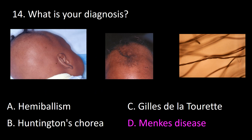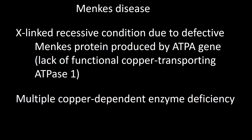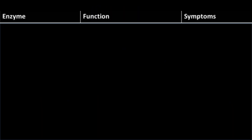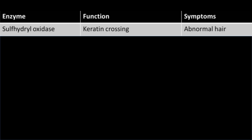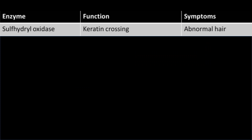Menkes disease is an X-linked recessive condition due to a functionally defective copper transporting ATPase 1, also called Menkes protein, produced by a mutated ATP7A gene. Consequently, the lack of copper transport to the portal system and liver results in no copper being available to produce copper-dependent enzymes. Other enzymes are also affected, leading by different mechanisms to brain damage.